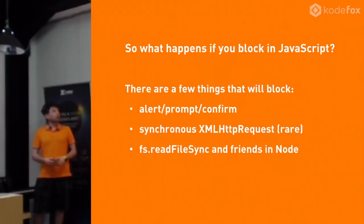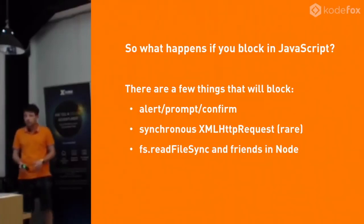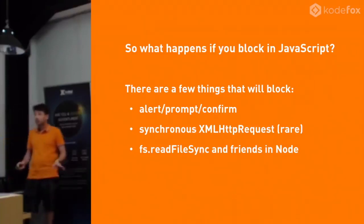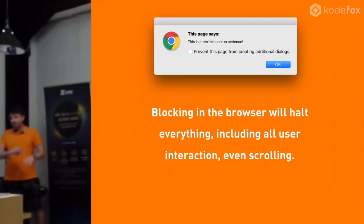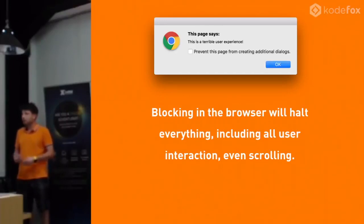So what happens if you block in JavaScript? There are some things that will block the thread and halt any other execution. Alert or prompt is the most common. We also have a synchronous style of XMLHttpRequest - and that was probably a mistake in the API. There are some things in Node world that are intentionally synchronous. The alert style blocks everything else - the page puts a dialogue up and everything pauses. You cannot interact or press a button. You can't even scroll. That's a bad user experience.